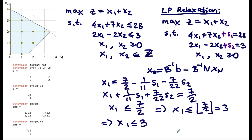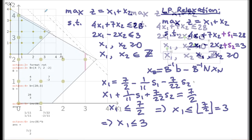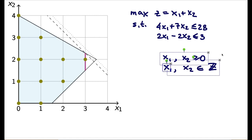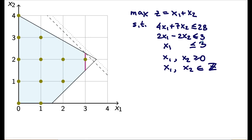All inequalities we have must be satisfied by all integer solutions. Therefore we can add x1 ≤ 3 to our problem without violating any constraints and without cutting off any feasible solutions to our integer program. We add this constraint, obtaining a tighter formulation equivalent to the original — we simply cut off a part of the LP relaxation's feasible region that was irrelevant for our IP.